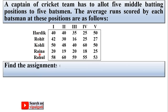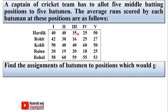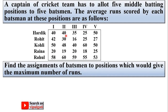These are the five names of the batsmen and these are the five batting positions, and this is the statistics for the runs corresponding to the different positions of each batsman. We have to find the assignment of batsmen to positions which would give the maximum number of runs — that means assigning different batsmen to different positions such that the team can make the maximum number of runs.